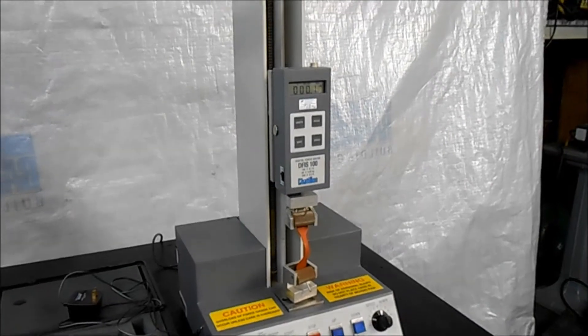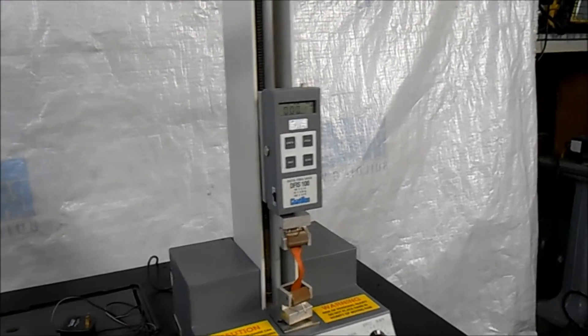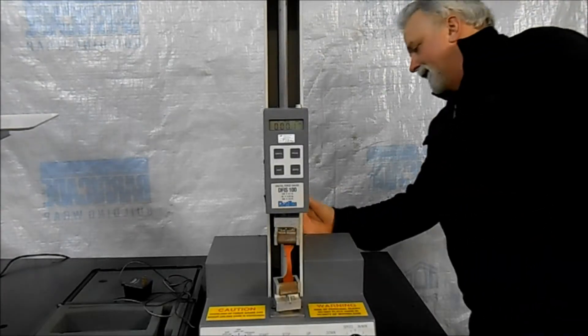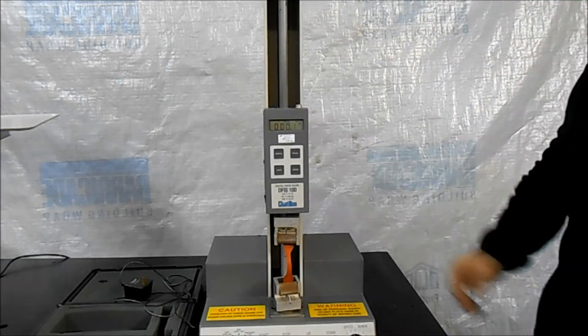I should point out too that the system has two limits on the back. There are mechanical limits for the switches. I won't show them. They're just on the back of the column here. And you can just slide them up and down on the column.